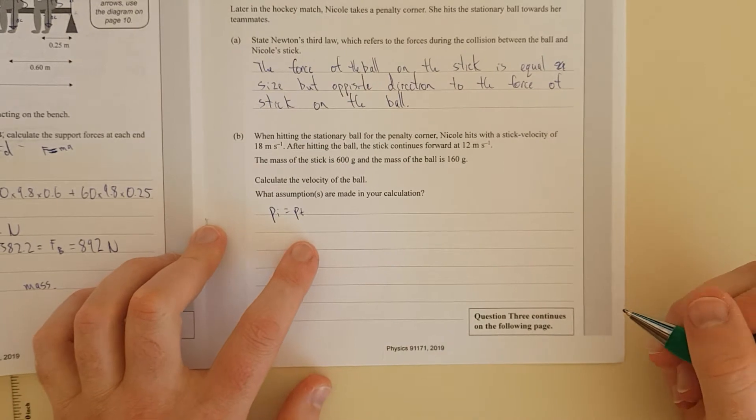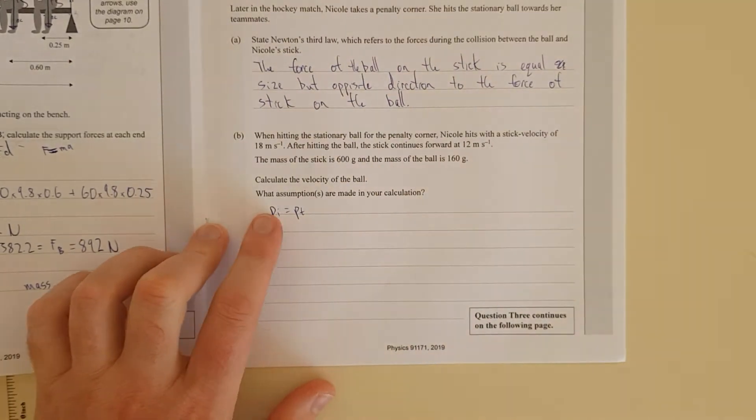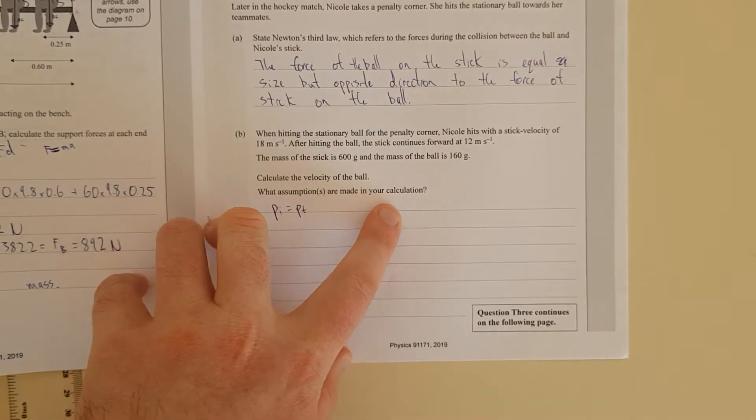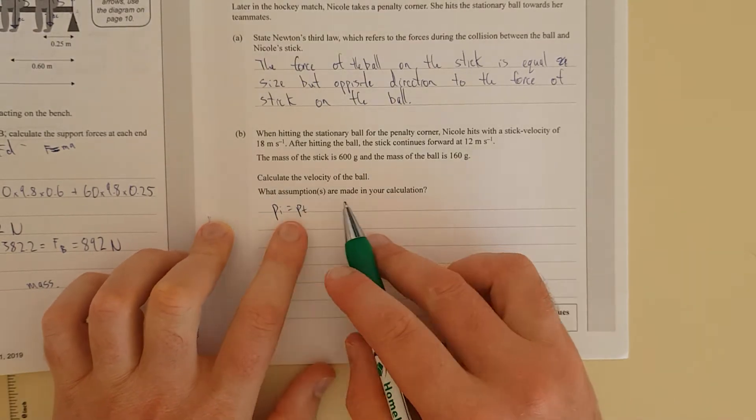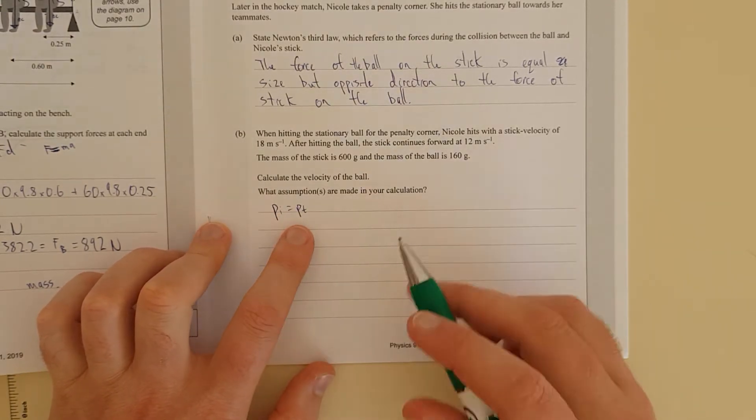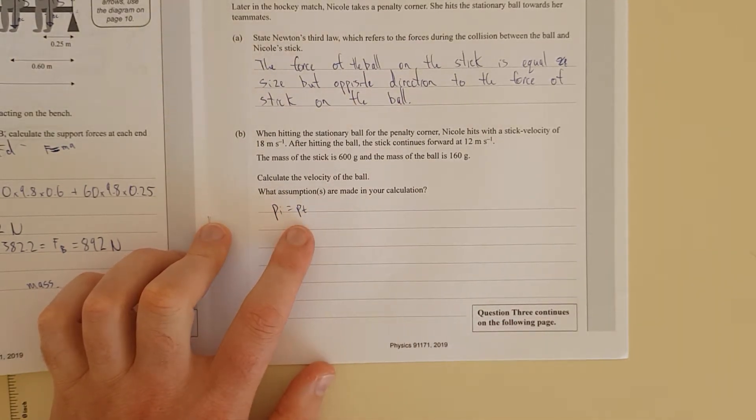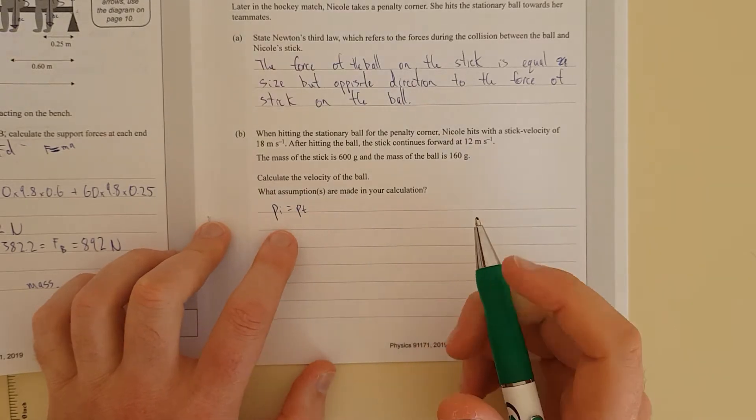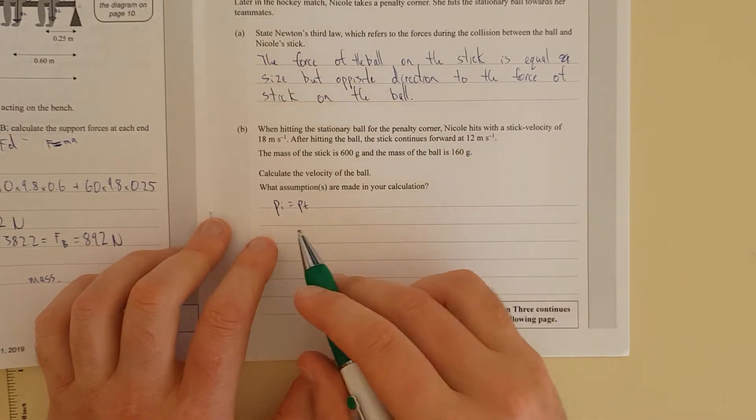So the first thing we're going to do is write the initial momentum is going to be equal to the final momentum. Look at this, what assumptions are you going to make in your calculation? Assuming there's no external forces, assuming there's no friction. That's the assumption that I'm going to make. There'll probably be others, but I'll figure them out as I go along.